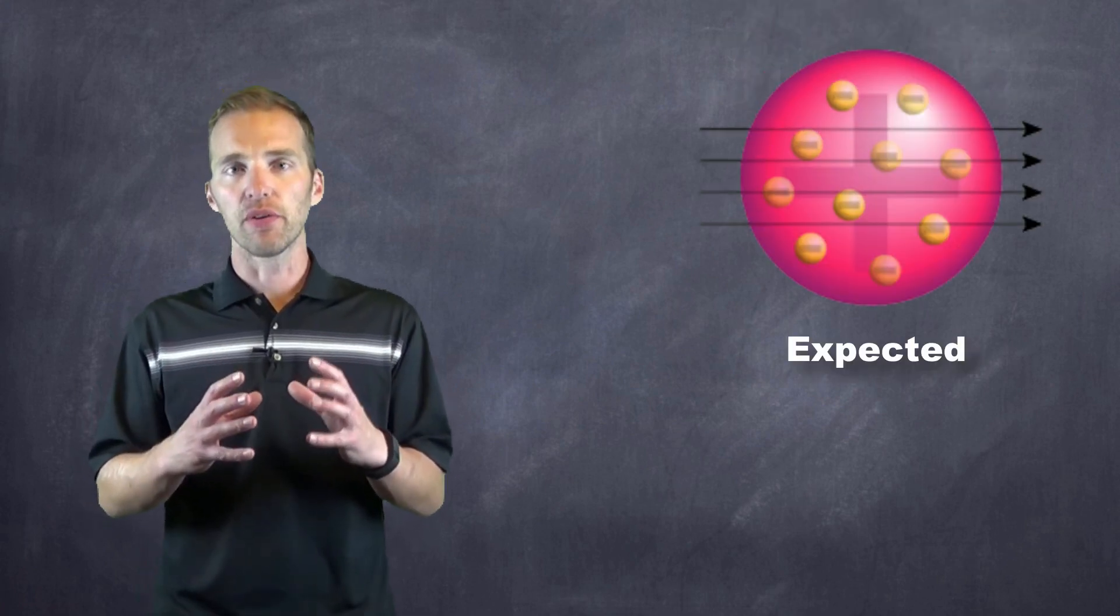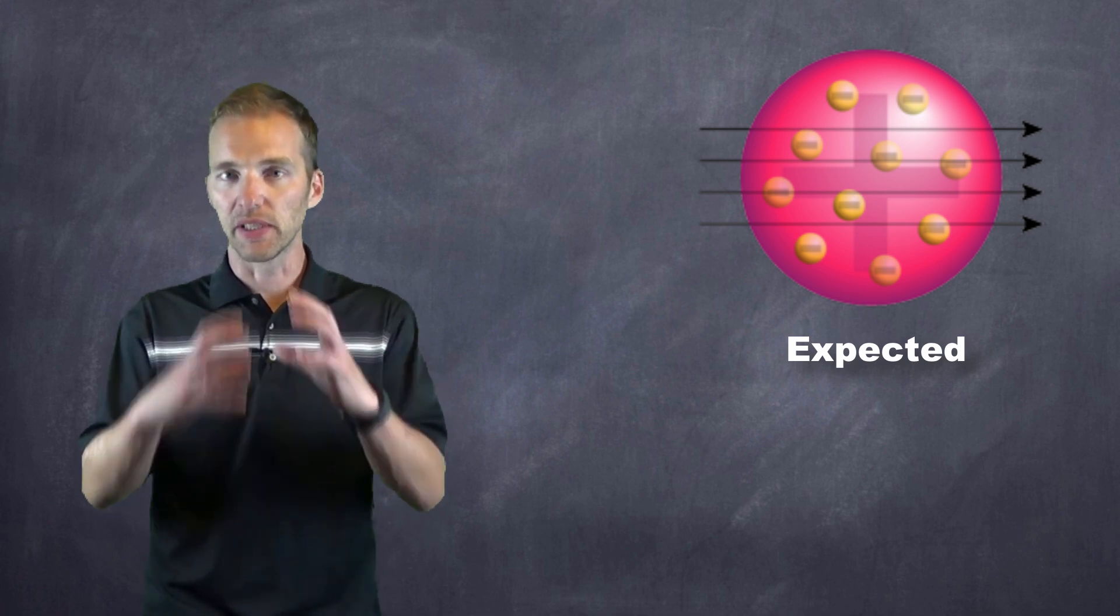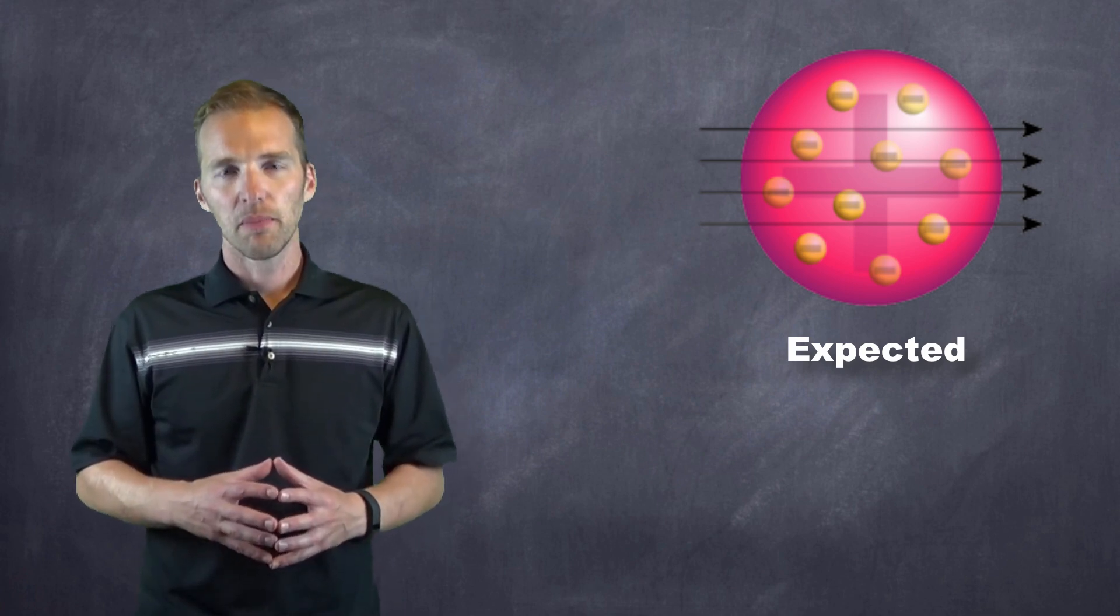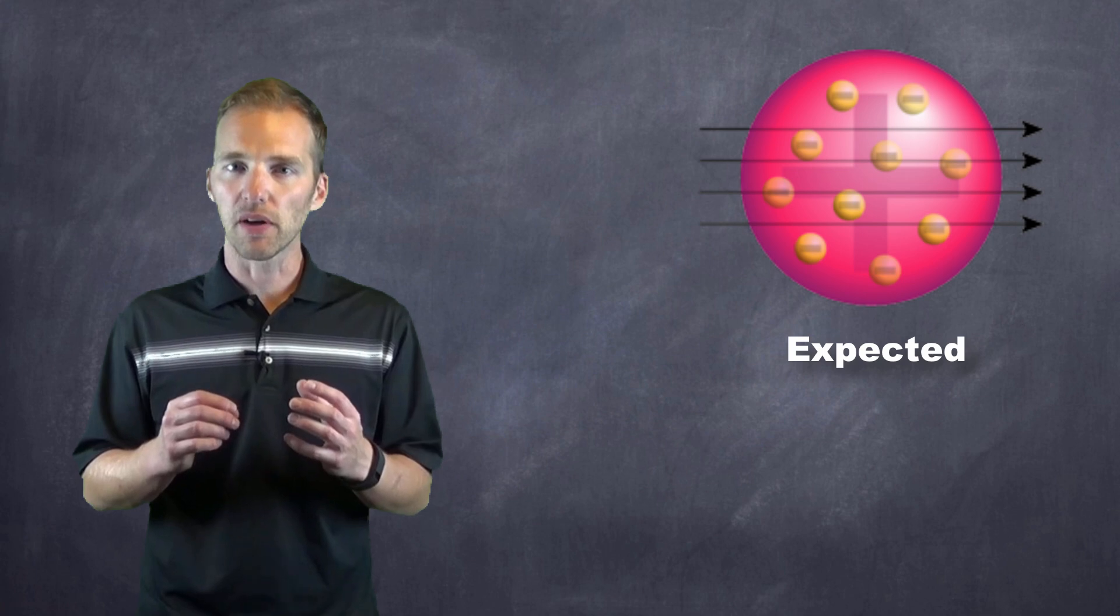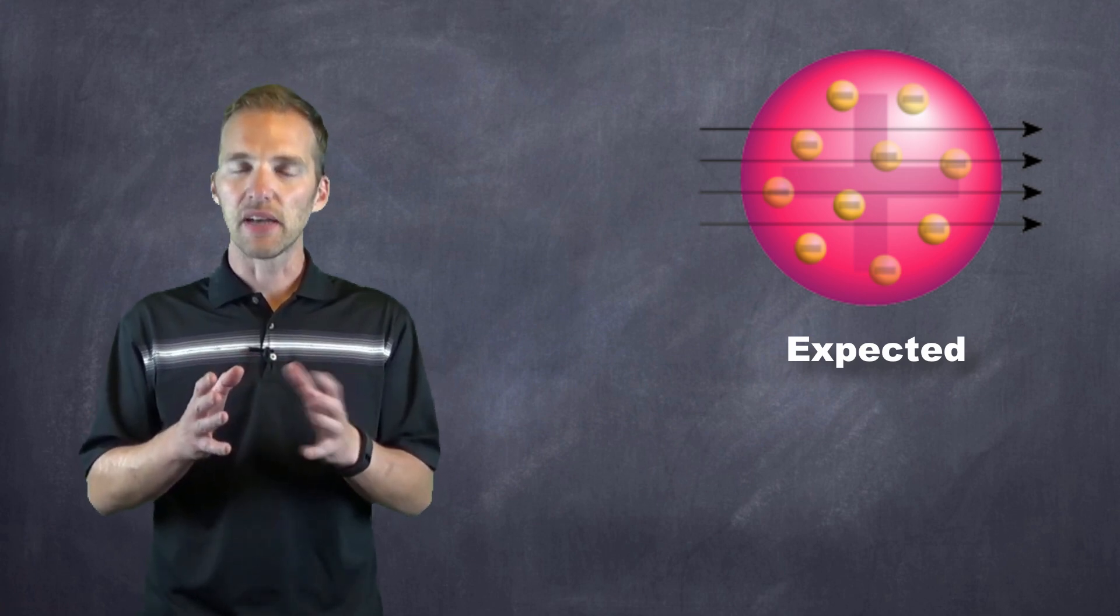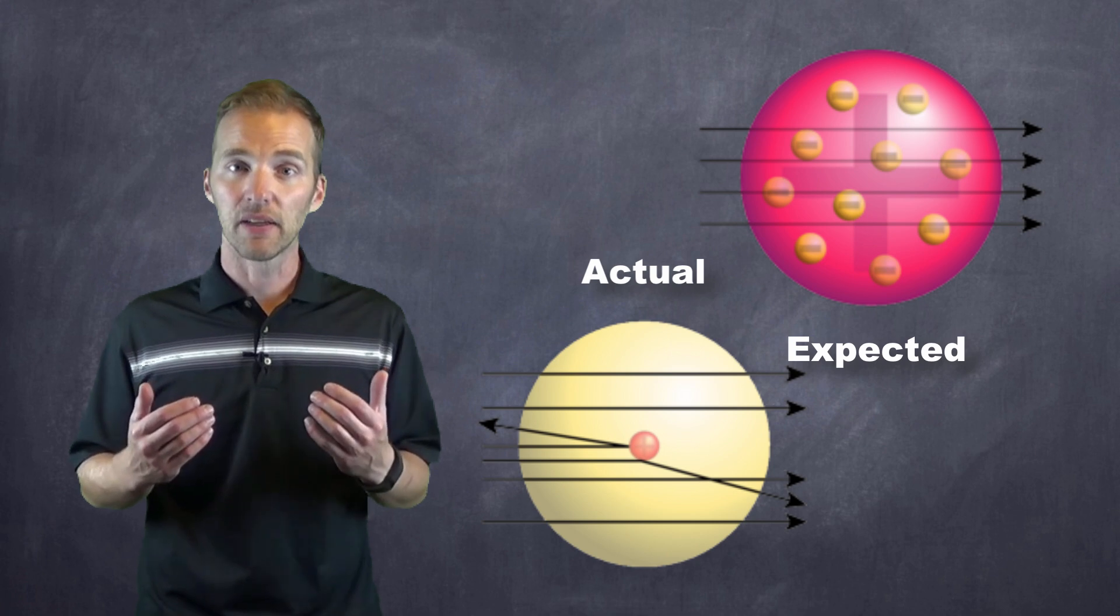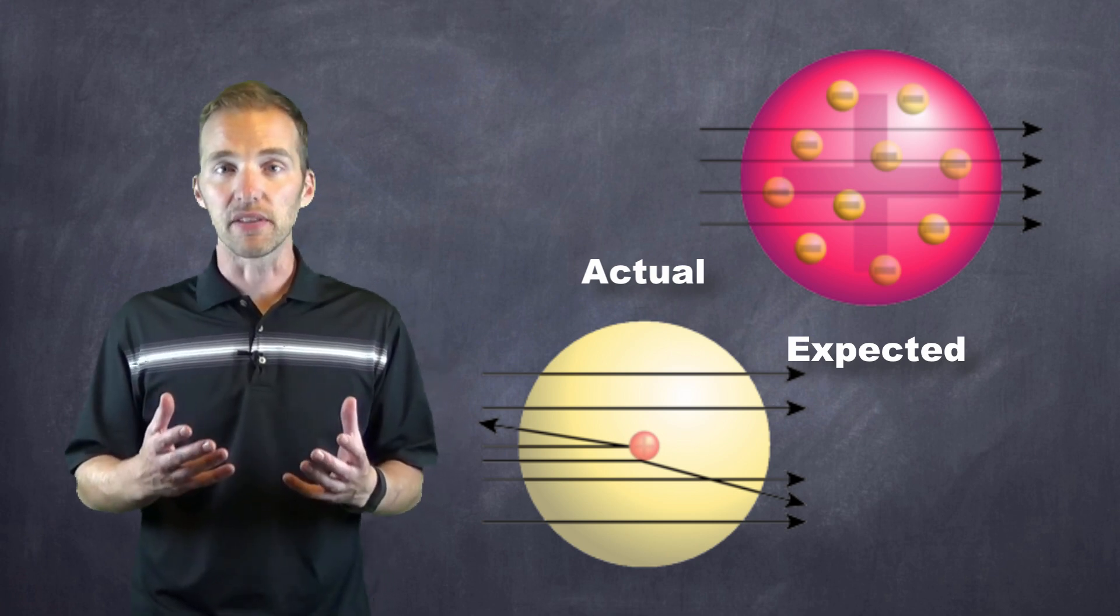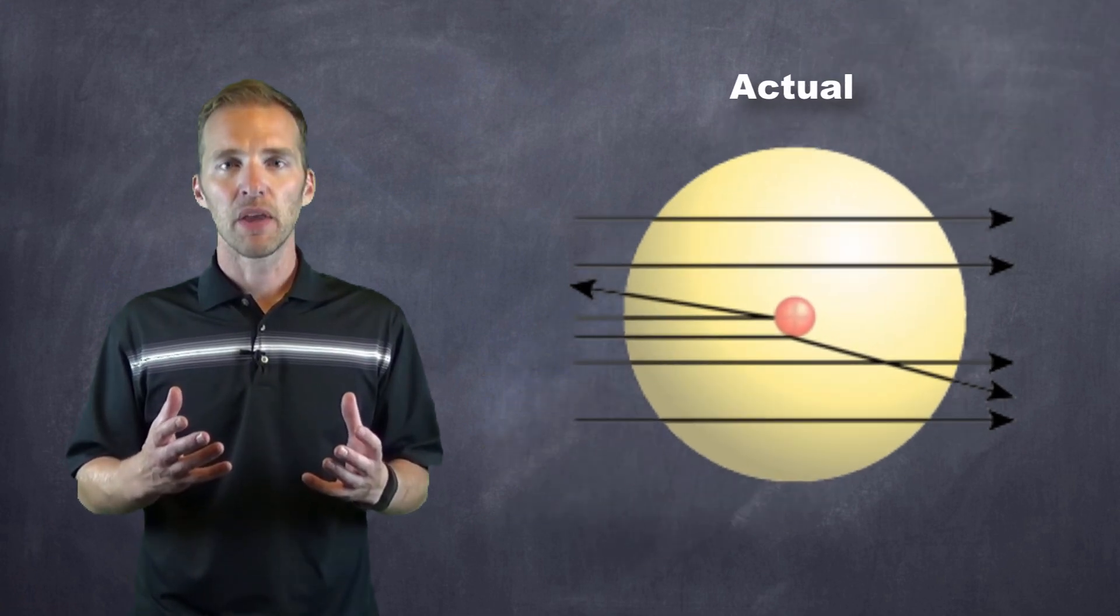Remember, atoms at the time were thought to be neutral, that they had the negatively charged particles within that positive gooey matrix of the Raisin-Bun model. But what was found was that some of these alpha particles, these positively charged particles, were being deflected as they moved through the gold foil and that some of them, in fact, were being reflected back.